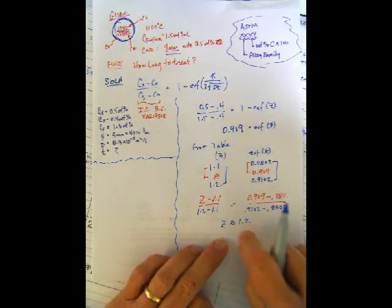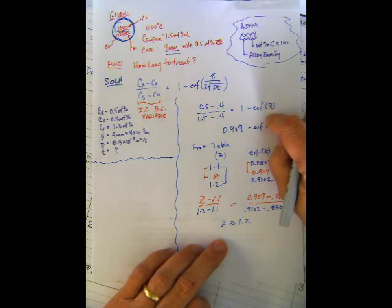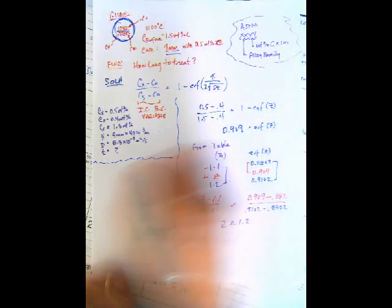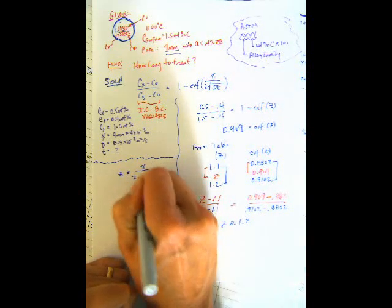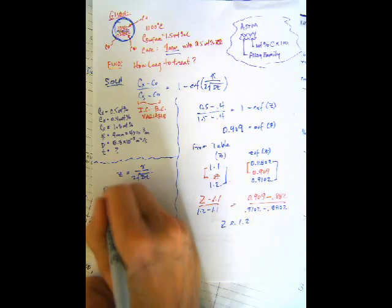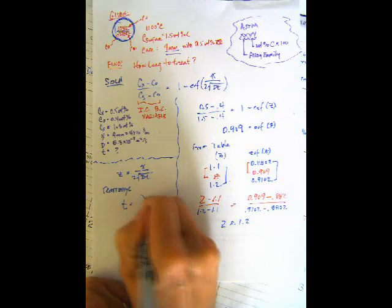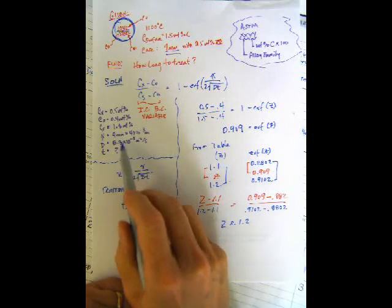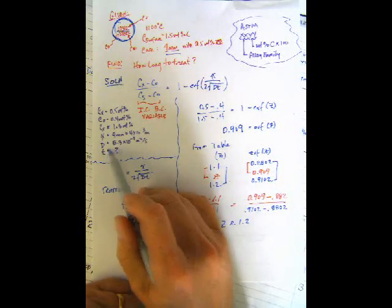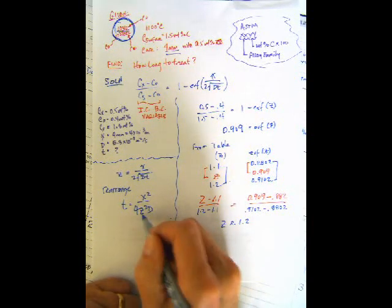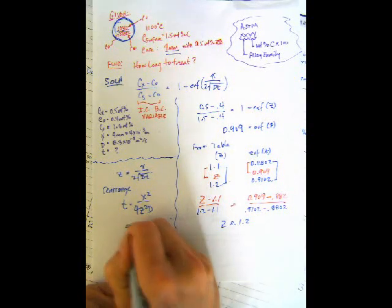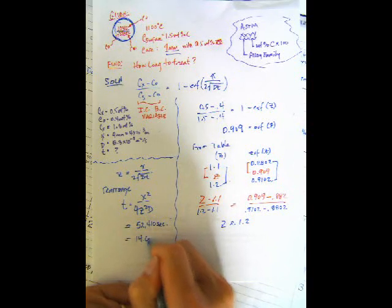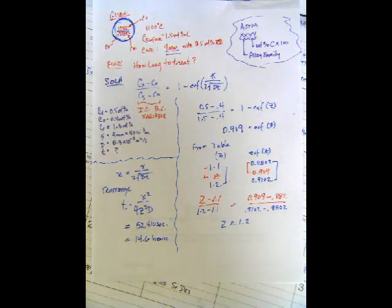So because we were really close to that value on the table, you would not have been introduced significant error by not interpolating, but I'm going to show you the process. All right, so now what that says is we know the value of Z, of the argument of the erf function, and that value Z has to equal x over 2 times the square root of Dt. And we know x and D, but we don't know t, so we can solve for t. So the relationship that we have is that Z is x over 2 square root Dt. Now if we rearrange this to t is equal to x squared over 4Z squared D, we can just plug in our numbers. X is going to be 4 times 10 to the minus 3 meters, and you need to use meters because your diffusivity is in meters squared per second. And then Z is unitless, just 1.2. And so if you plug in all your numbers and turn the crank, you should get 52,410 seconds, which works out to 14.6 hours, or you should probably report 52,000 seconds.